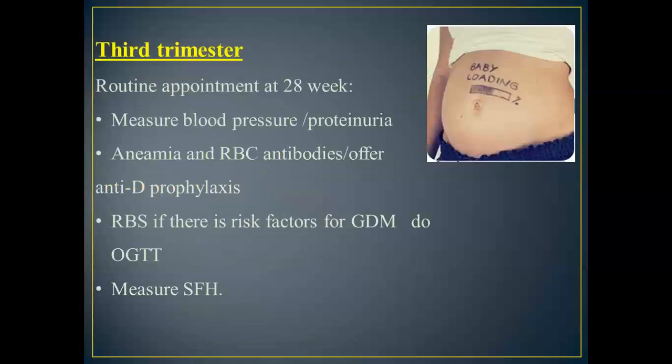In the third trimester, there is a routine visit at 28 weeks. We measure blood pressure, screen for proteinuria, check for UTI, do a CBC, and if the patient has a negative blood group, screen for antibodies. If no antibodies are present, we offer a prophylactic dose of anti-D. Random blood sugar is repeated at 28 weeks, and if there was a history of gestational diabetes with a normal OGTT at booking, the OGTT should be repeated at 28 weeks.